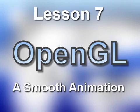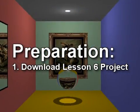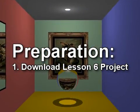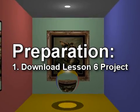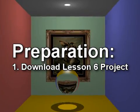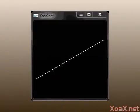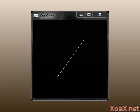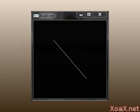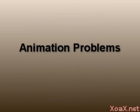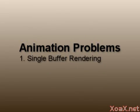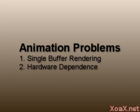Lesson 7: a smooth animation. To follow along with this lesson, download the project from the previous lesson, OpenGL lesson 6. In our last lesson we demonstrated how to create a simple animation. That animation had some problems which we are now going to address. The first problem was that the drawing used a single buffer. The second problem was that the animation speed could vary greatly depending on the hardware.